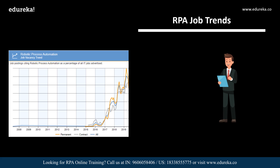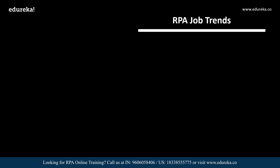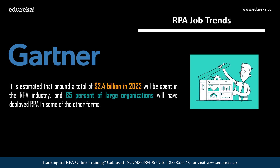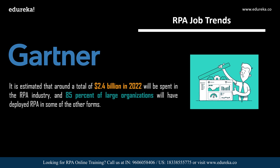Now let's look at the job trends of an RPA developer. As you can see on my screen, the number of RPA developer jobs in the United Kingdom is increasing on a large scale. Companies such as IBM, Infosys, and KPMG are offering lucrative salaries. According to Gartner, around 2.4 billion US dollars is estimated to be spent in the field of RPA by 2022, and 85% of large organizations will have deployed RPA in some form.